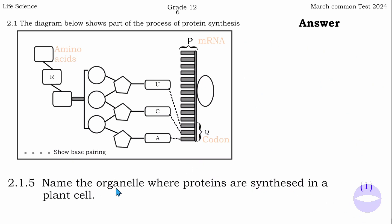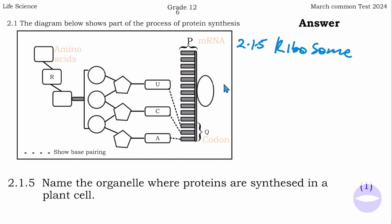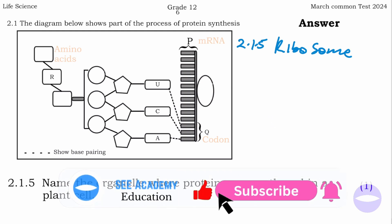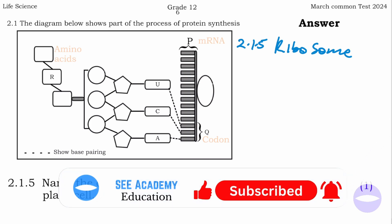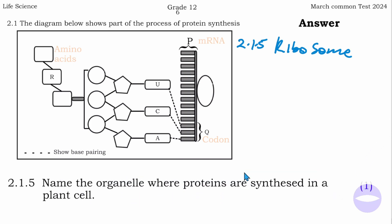The next question says: name the organelle where proteins are synthesized in a plant cell. Question 2.1.5 — the answer is ribosome. Proteins are synthesized in the ribosome in a plant cell. That is the last question. If you have watched this video this far, please give it a thumbs up and subscribe to our channel. Good luck with your studies. Thank you very much. God bless you.